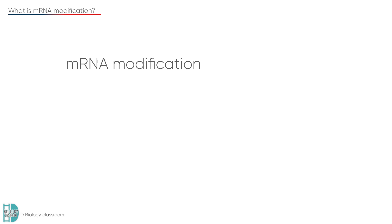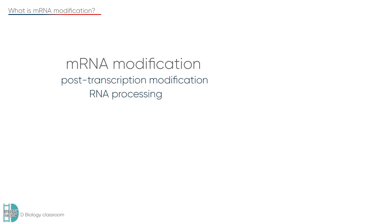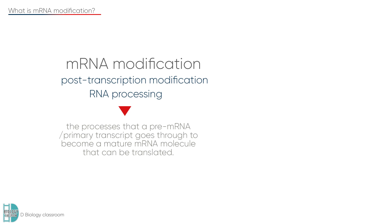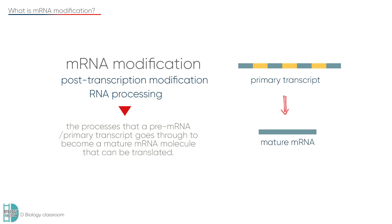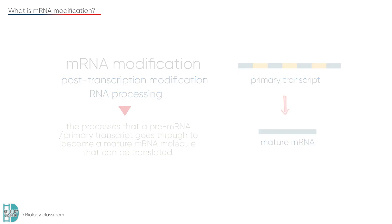mRNA modification is also known as post-transcription modification or RNA processing. This is a term to describe the processes that a pre-mRNA or primary transcript goes through to become a mature mRNA molecule that can be translated.